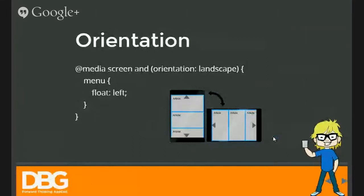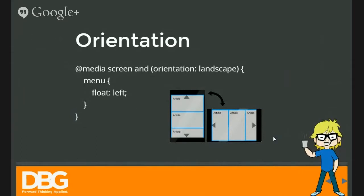Orientation — the orientation of the device can be used to create a custom layout. This may be useful for positioning menus and buttons in a place that is easily accessible for users. This media query returns whether the device is in portrait mode or landscape mode when the person is viewing that website. Mostly used for handheld devices.